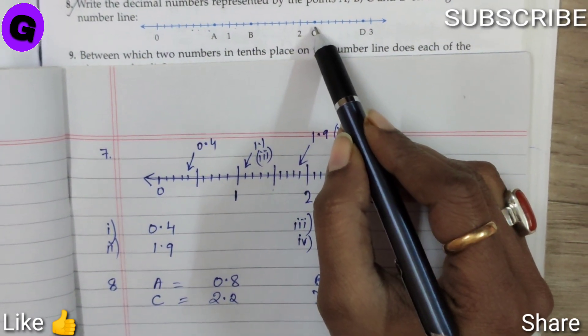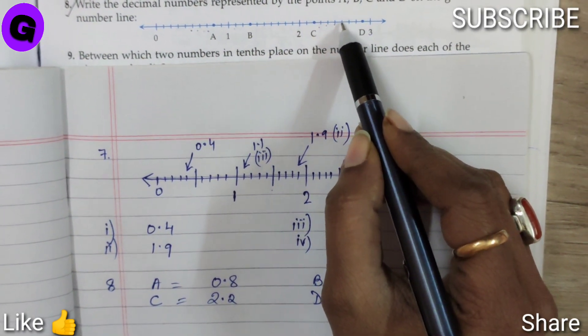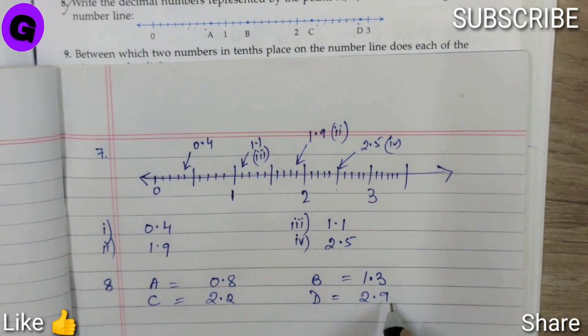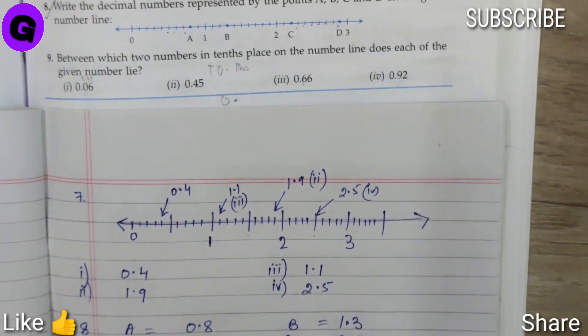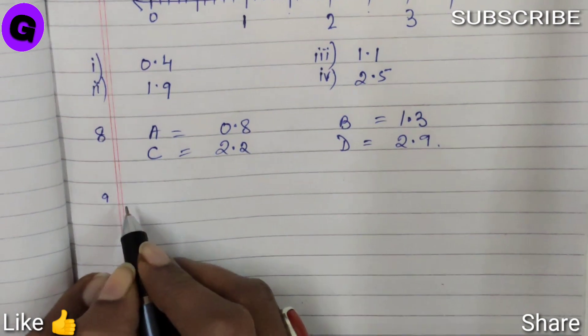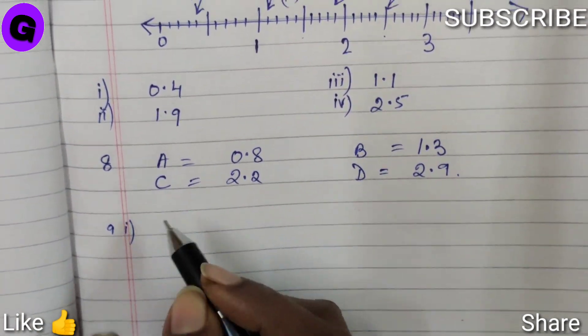Number D, 2.2, 3, 4, 5, 6, 7, 8, 9, 2.9. D is 2.9. Now question number 9, first part it says.